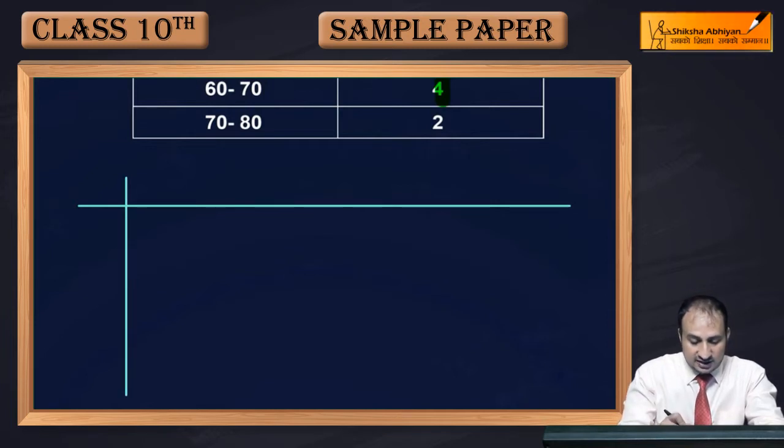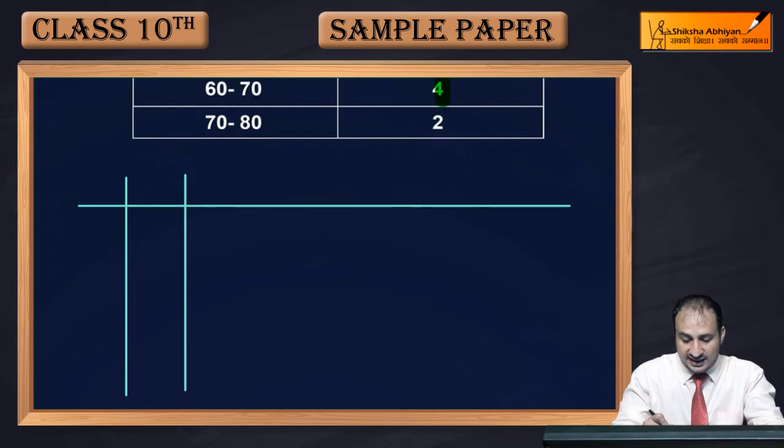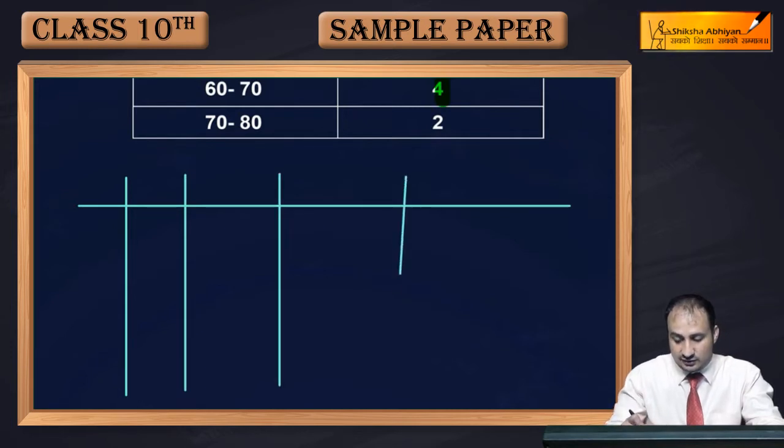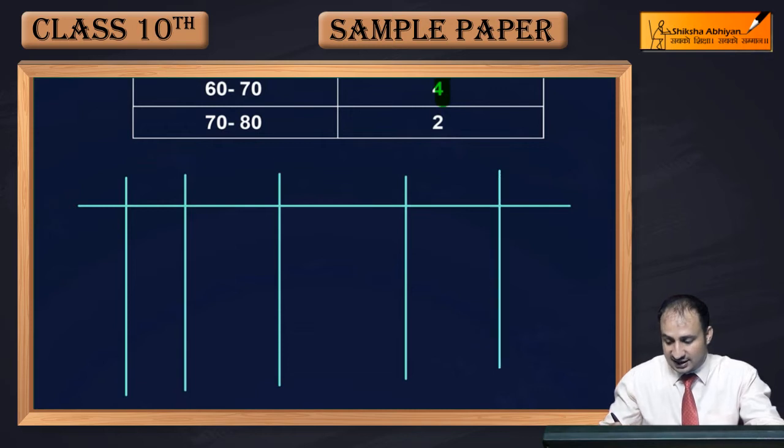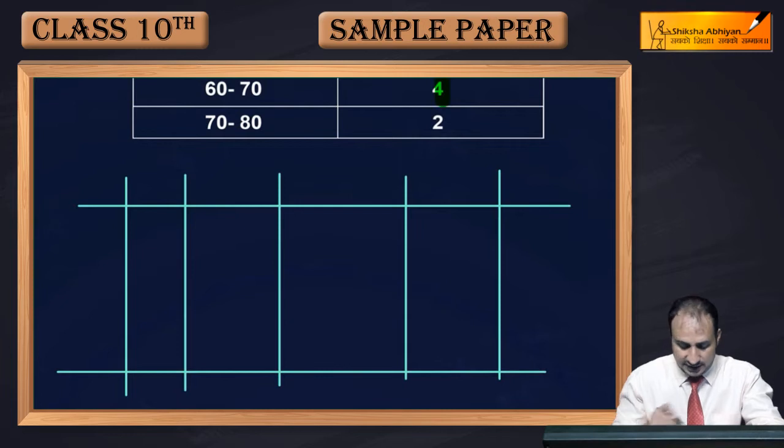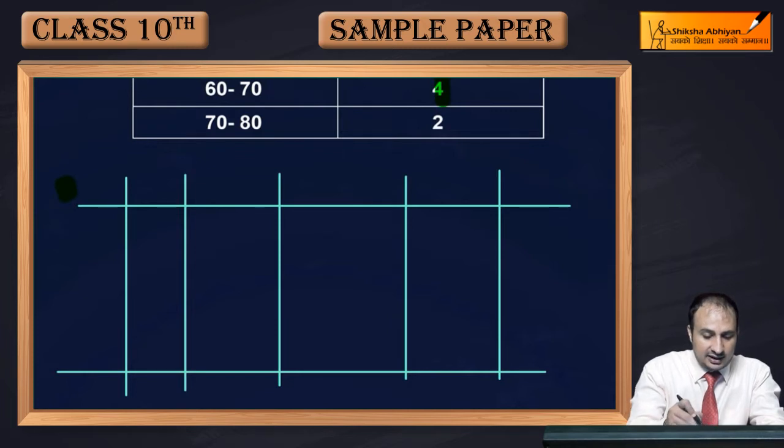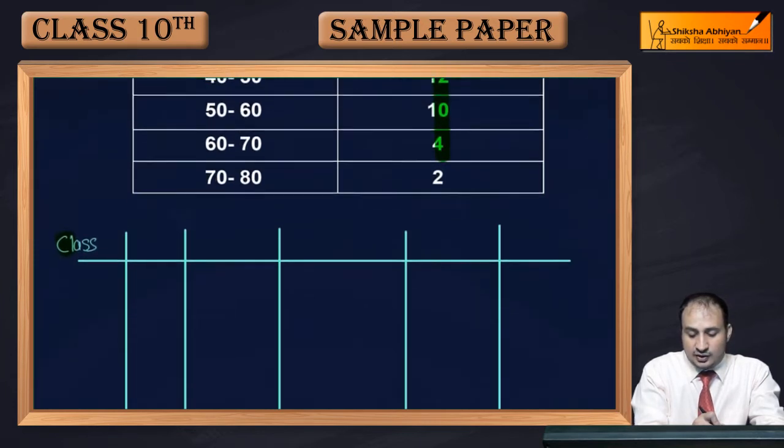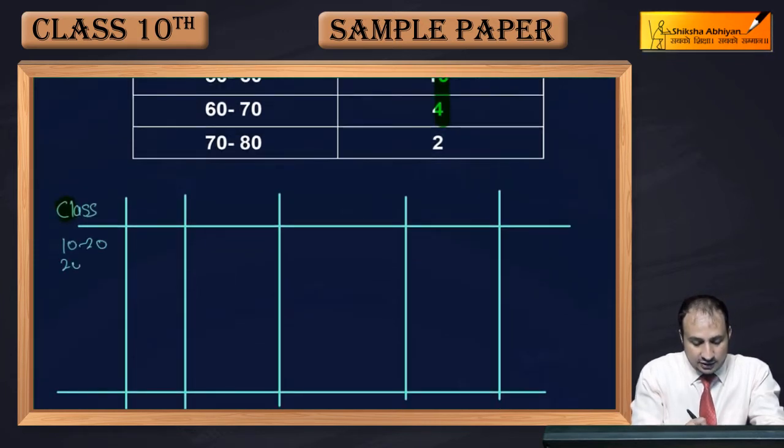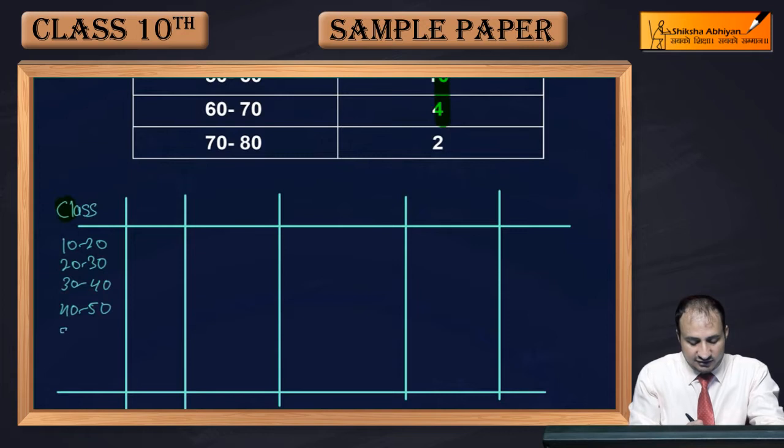First of all, this is for class, then after this for frequencies, then less than type of class, less than type of frequency, then more than type class, more than type frequency. This is roughly what I have made. Now first, here the class is, if we talk about it, the first class is 10 to 20 and it goes up to 80. So 10 to 20, 20 to 30, 30 to 40, 40 to 50, 50 to 60, 60 to 70, and 70 to 80.